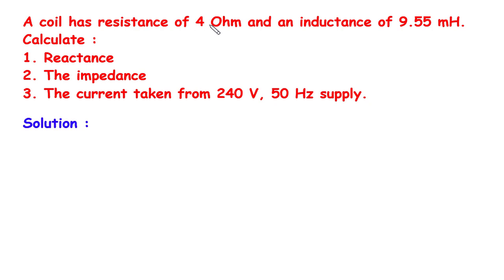A coil has resistance of 4 ohm and inductance of 9.55 mH. Calculate: 1. Reactance, 2. The impedance, and 3. The current taken from 240V 50Hz supply.